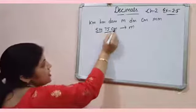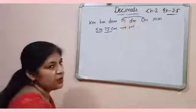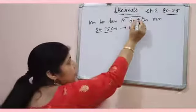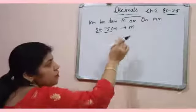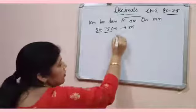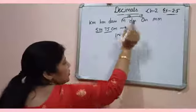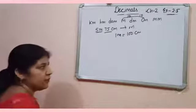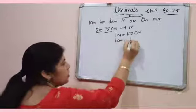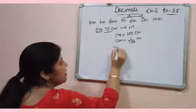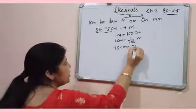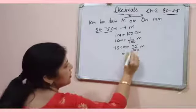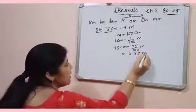So we have to convert centimeter into meter. Means you have to move back and when you move back you have to divide. So first write the relation between centimeter and meter. 1 meter is equal to 100 centimeter. So 1 centimeter will be equal to 1 by 100 meter. Then 75 centimeter is equal to 75 by 100 meter. It means 0.75 meter.